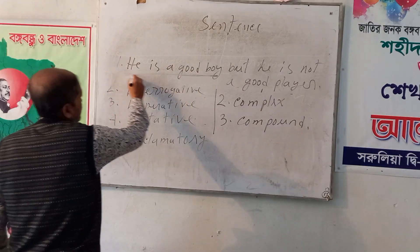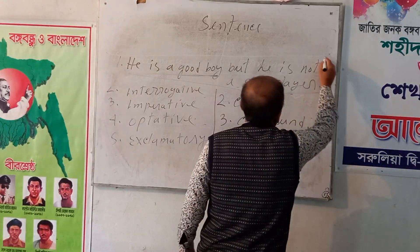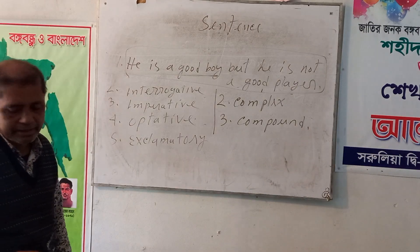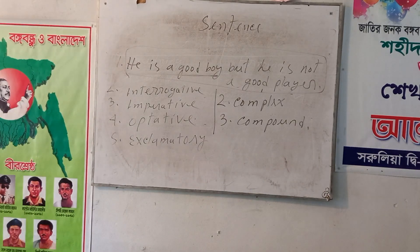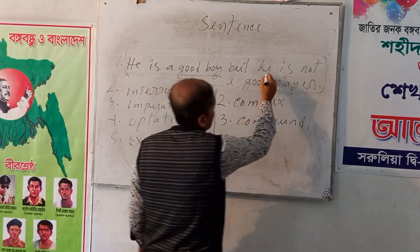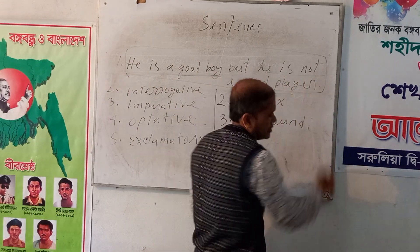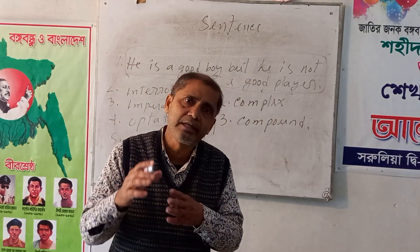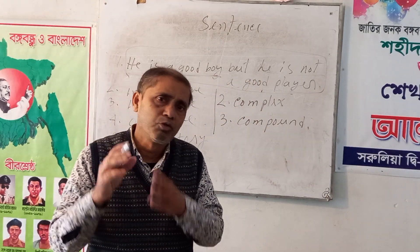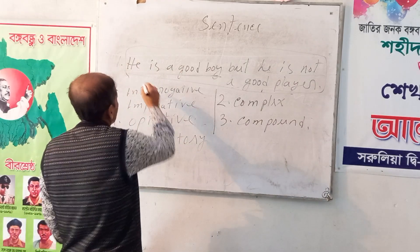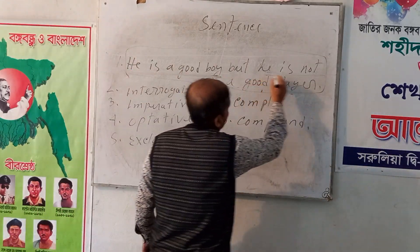This is a sentence. This sentence has two thoughts. One is: 'He is a good boy.' Another is: 'He is not a good villain.' Each part of this sentence is called a clause. This part of the sentence is called a clause.